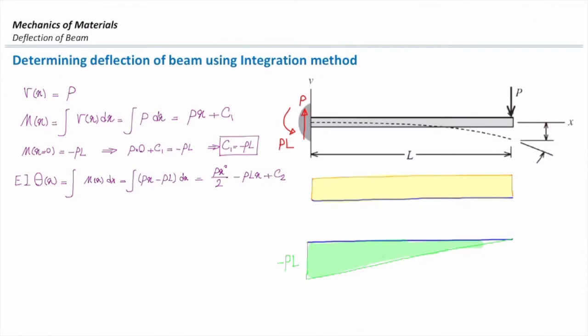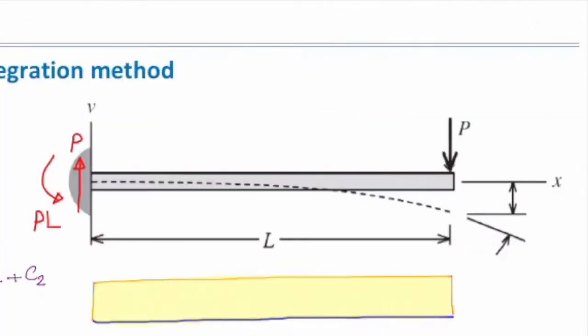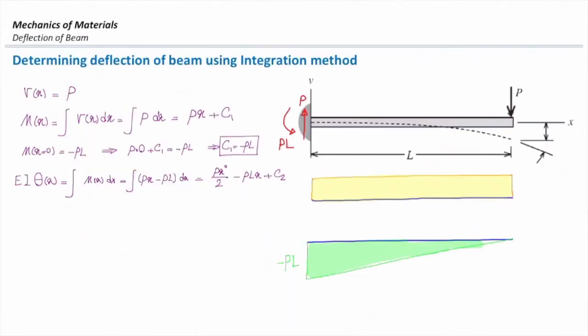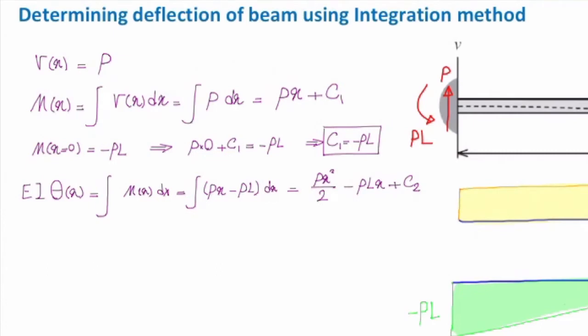How can I determine C2? At X equal to zero, the slope is zero because there is a fixed support at that end. So I set EI times theta at X equal to zero equal to zero, and that gives me C2 equal to zero.